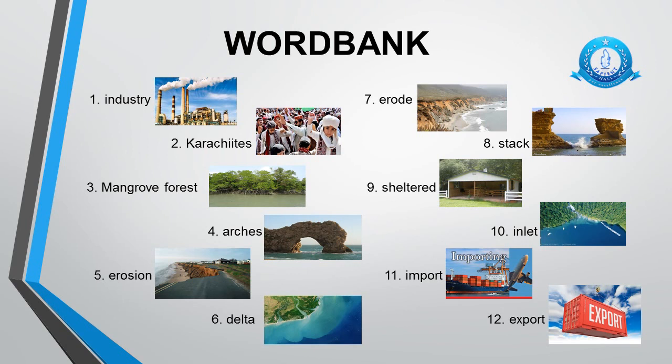Ninth word is sheltered — sheltered means covered or protected. Tenth word is inlet — inlet is a narrow opening through which water flows into an area of land. Eleventh word is import — import means buying goods and services from other countries. Twelfth word is export — export means selling goods and services to other countries. I hope you all must have learned the pronunciation and meanings of these words.